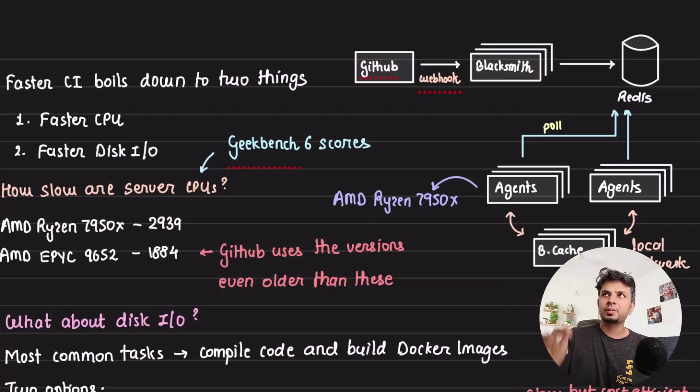So first thing first, if you look at any CI/CD job, any CI/CD job basically boils down to consumption of CPU and disk. So what if you use faster CPU and faster disk, then you can possibly run your CI/CD job much faster. That's the whole idea. Let's look at the CPU part.